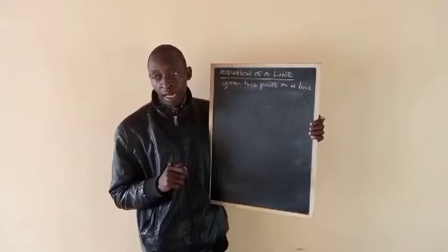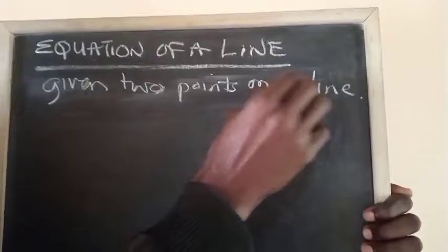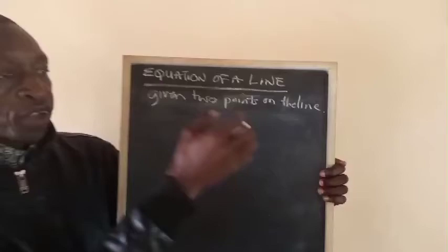We have the equation of a line given two points on the line. I think I got it right. The line is in English. We previously discussed the equation of a line when we were given one point and the gradient.